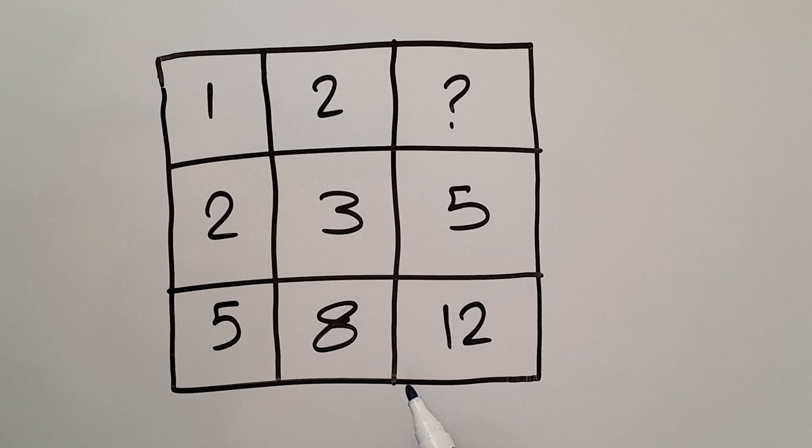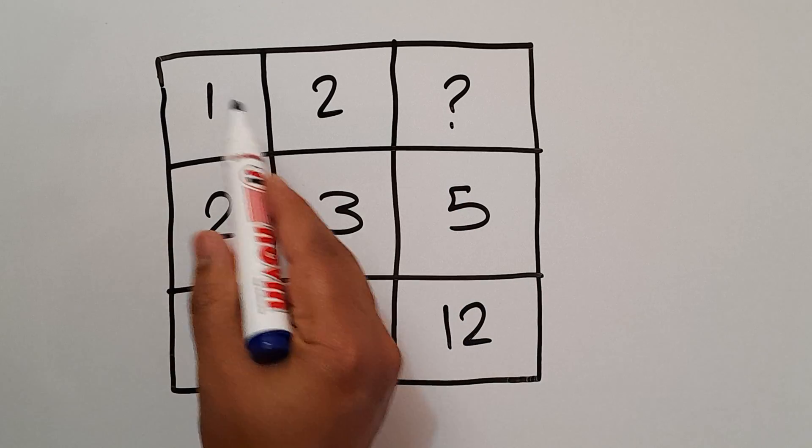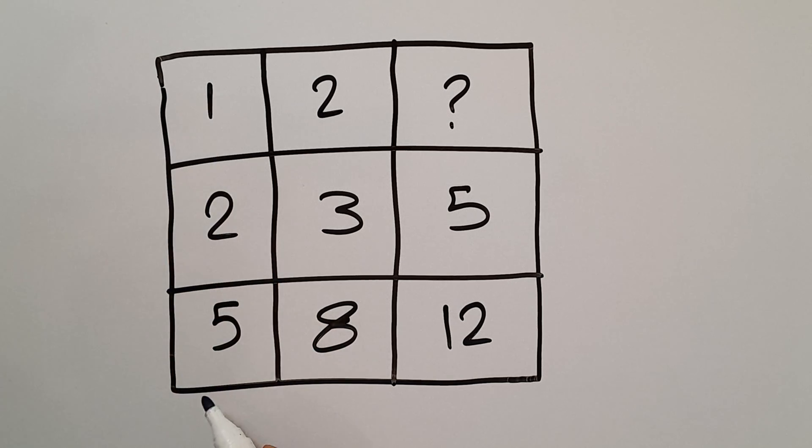Let's get started. Instead of rows, we need to focus on columns. In each column, we have 3 numbers, and we need to find the relationship between these 3 numbers.